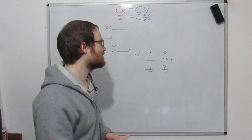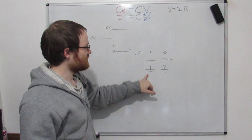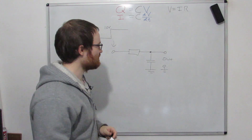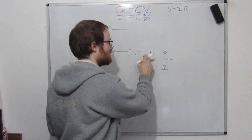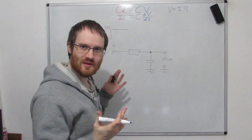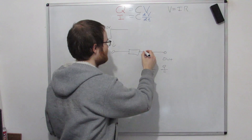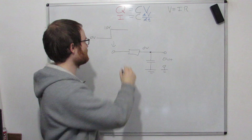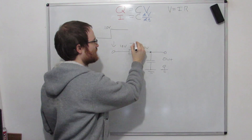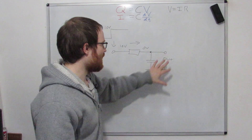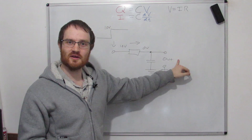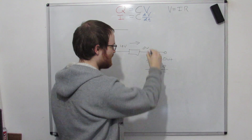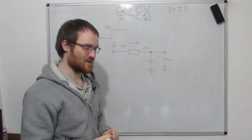We know Ohm's law. We know this was zero — we have no voltage applied — so this point here is also zero, because how could it be anything but zero? So we've got zero volts here and we're going to have 10 volts here, so we're going to have some current flow this way. And let's assume that at our output we're not drawing any current, so this current is going to go across here and down to ground through this capacitor.